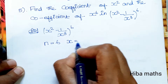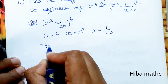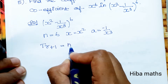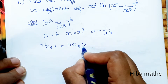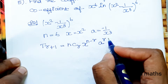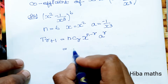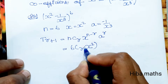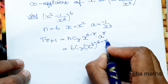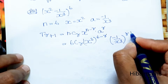We will find the coefficient of x squared. With n = 6, x = x², and a = -1/x³, we substitute into the binomial formula: T(r+1) = nCr · x^(n-r) · a^r. Substituting: T(r+1) = 6Cr · (x²)^(6-r) · (-1/x³)^r.